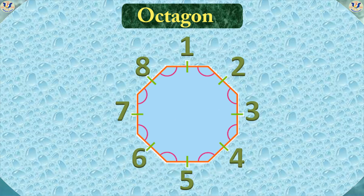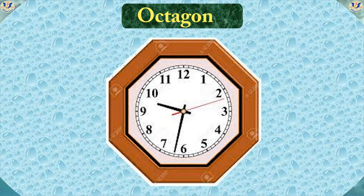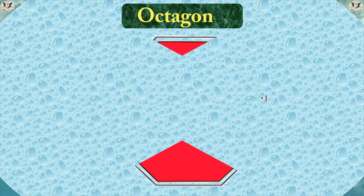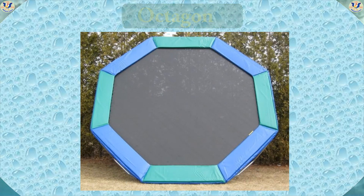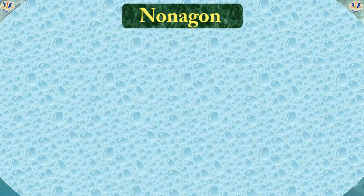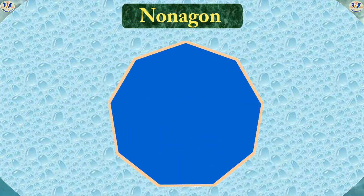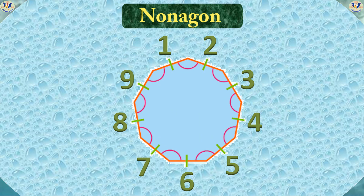Octagon — has eight sides and eight angles. Nonagon — has nine sides and nine angles.